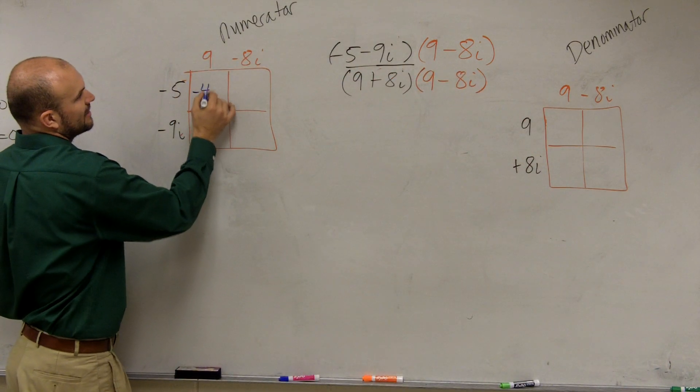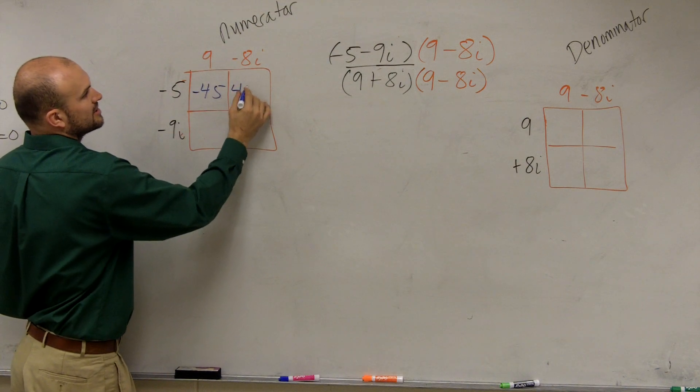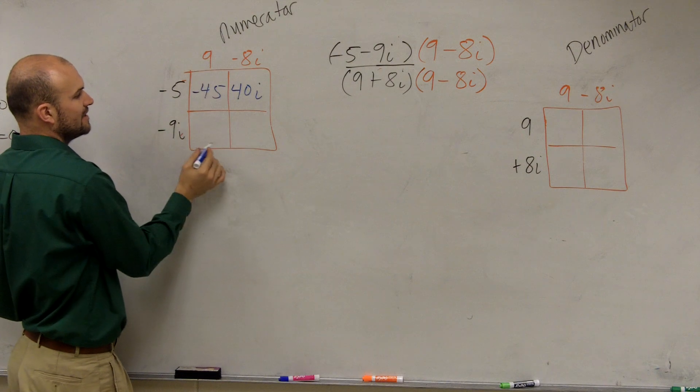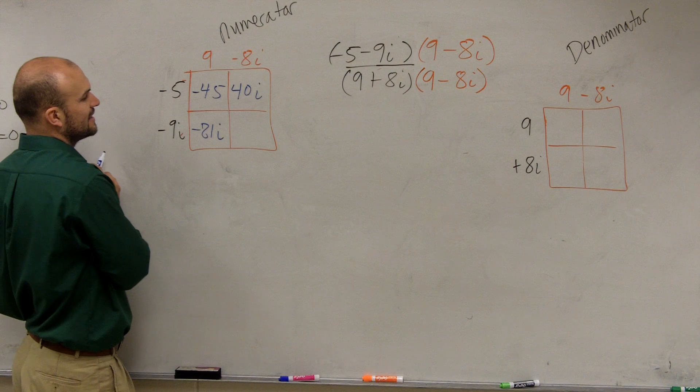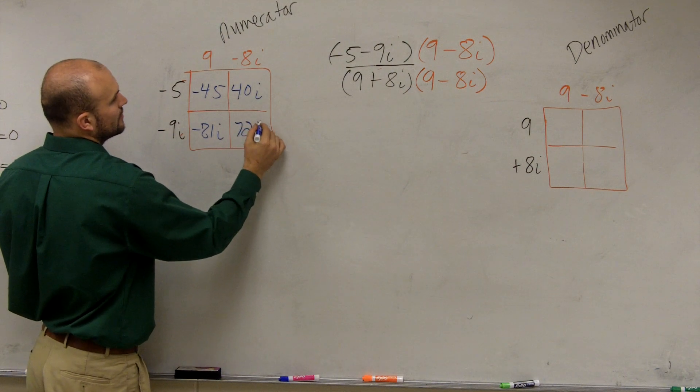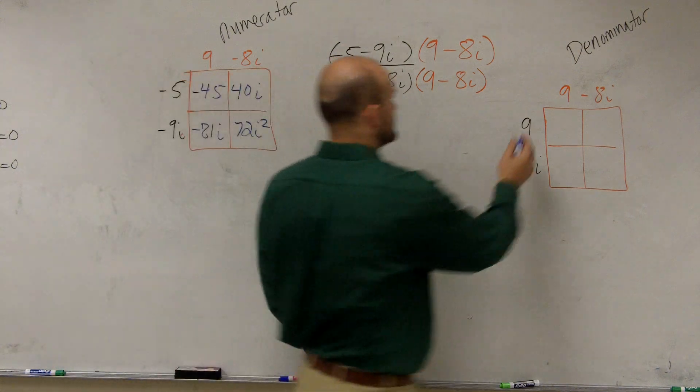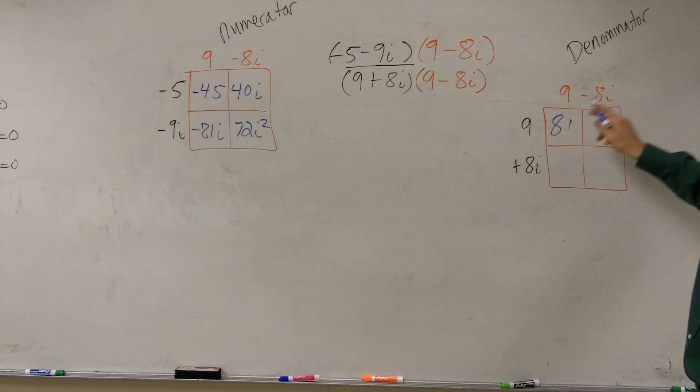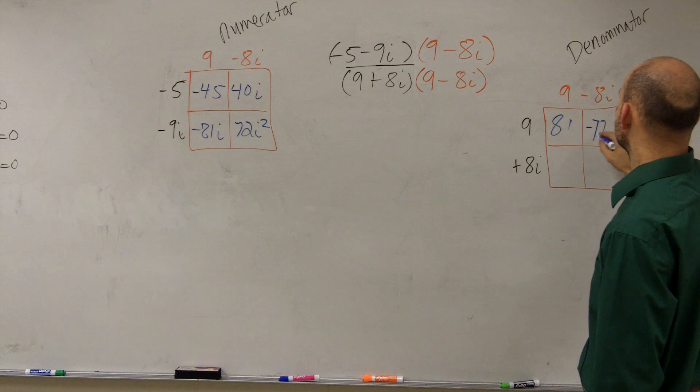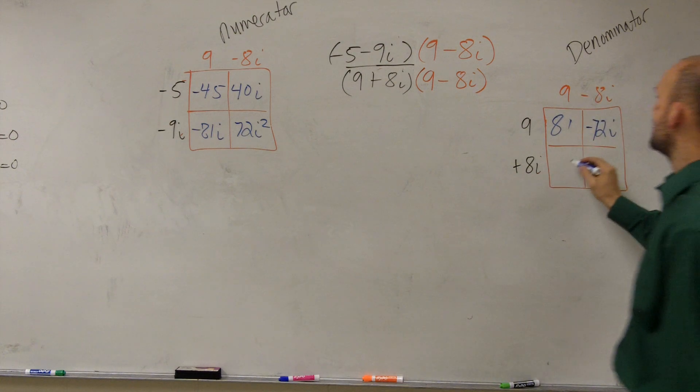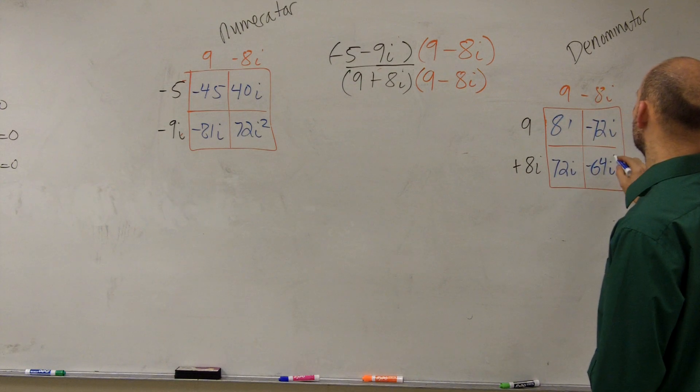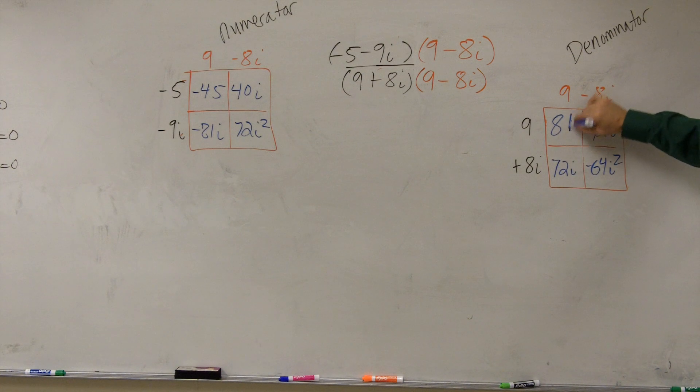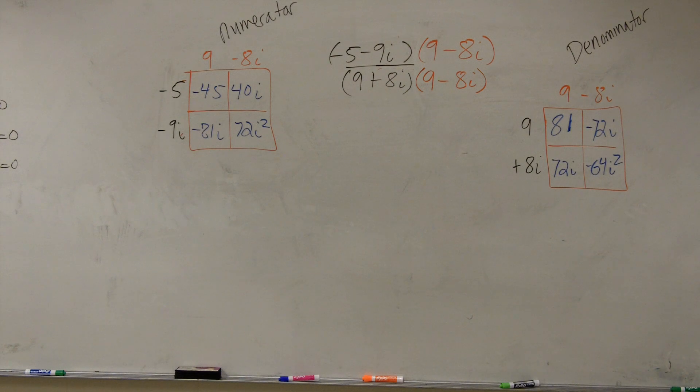Negative 5 times 9 is negative 45. Negative 5 times negative 8 is positive 40i. 9 times negative 9i is negative 81i. And negative 8i times negative 9i is going to be a positive 72i squared. Over here, 9 times 9 is 81. 9 times negative 8i is a negative 72i. 9 times positive 8i is a positive 72i. And 8 times negative 8i is a negative 64i squared.